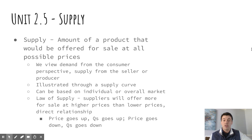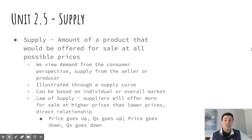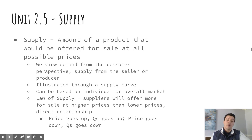We do illustrate supply through the supply curve, similar to what we see with demand. It's going to be on the identical same graph. The supply curve is different because it is upward sloping as opposed to downward sloping, so it's going to form an X ultimately when we put them together. Again, we still can have an individual supply curve looking at one company or one seller, or we can look at an overall market for an industry — both ways, just like with demand.